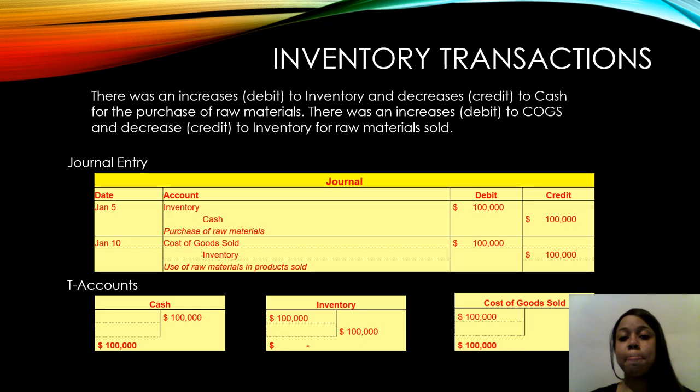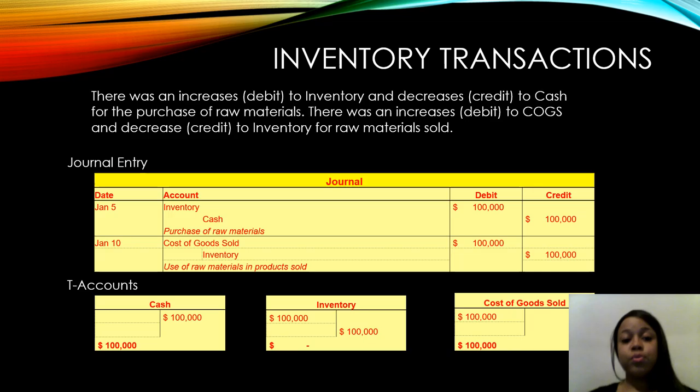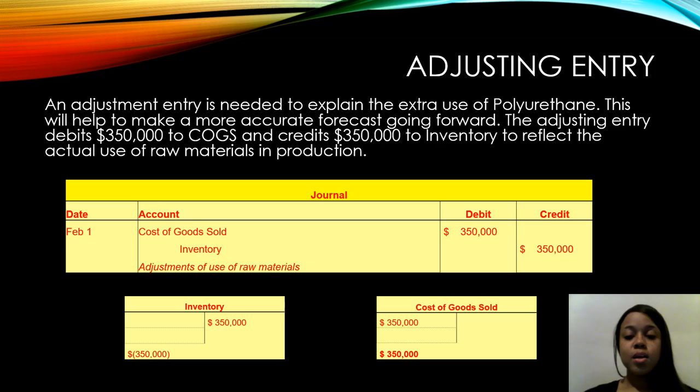The inventory transactions go as follows: there was an increase or debit to inventory and a decrease or credit to cash for the purchase of raw materials. There also was an increase or debit to cost of goods sold and a decrease or credit to inventory for raw materials used. If you look below, you will see that the journal entry and the T-accounts align and match each other.